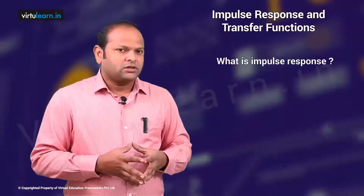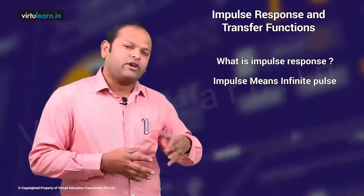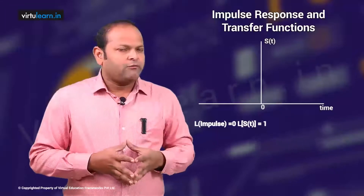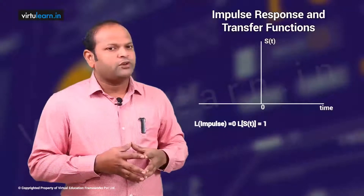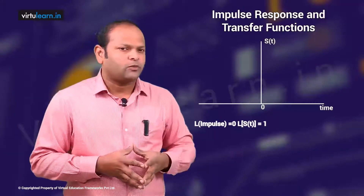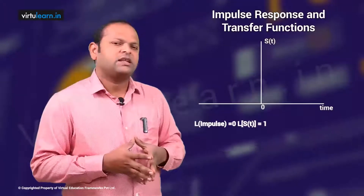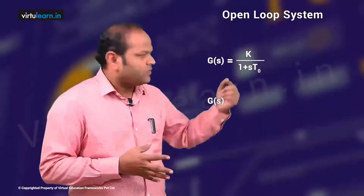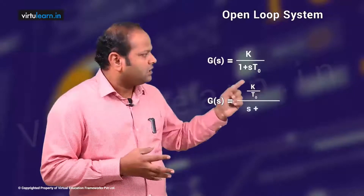Now let us see the effect of feedback on the impulse response of the system. The impulse is like a spike — a very short infinite pulse. The Laplace equivalent of an impulse equals 1, meaning the input we give is 1 and we look at the output C(s). Applying inverse Laplace transform gives the impulse response. For the non-feedback open loop system, the transfer function G(s) = K/(1 + s·T₀), which we can rearrange to (K/T₀) / (s + K/T₀).